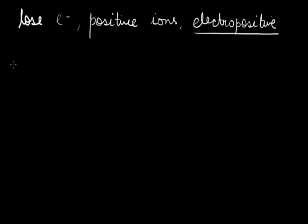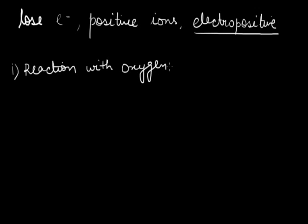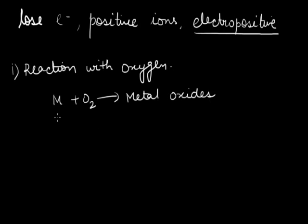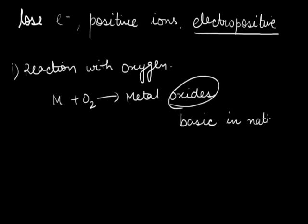Coming on to the chemical properties of metals, we start with the reaction of metals with oxygen. In general, metals react with oxygen to form metal oxides. These oxides are basic in nature. It is important to note that the nature of metal oxides is basic.